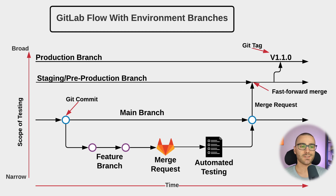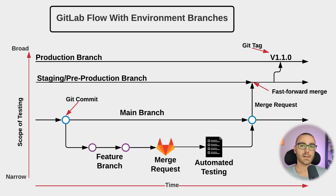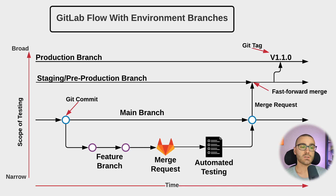After the feature branch is merged into the main branch, we would open a merge request from the main branch to the staging/pre-production branch, or whatever your environment branch is called. You would create however many environment branches for however many environments your codebase is deployed to. Similar to the feature branch workflow, after creating the merge request, that should trigger automated testing. If automated testing passes, we promote the changes from the main branch into the staging/pre-production environment.